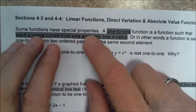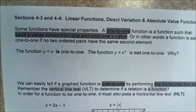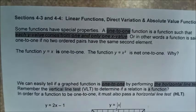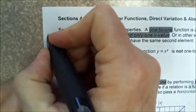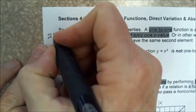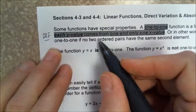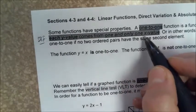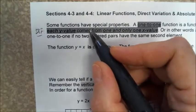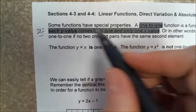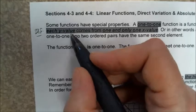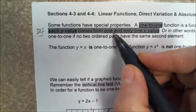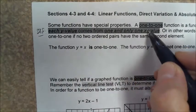Some functions have special properties, like I said in the previous video. A one-to-one function is a special function, and here's the definition: each y value comes from one and only one x value. This is the reverse of what a regular function is. A regular function has one x value for every y value, but a one-to-one function has each y value coming from one and only one x value.